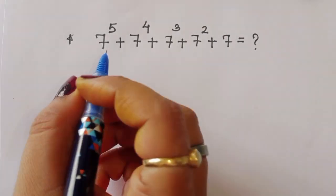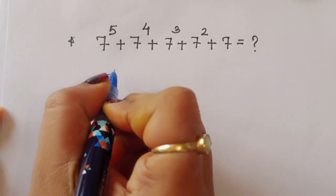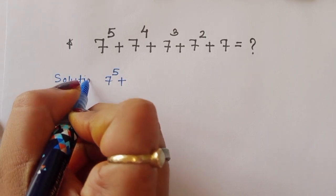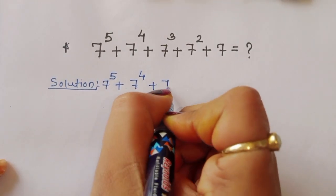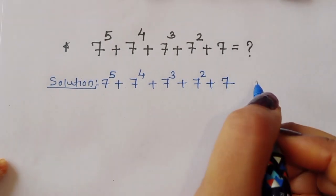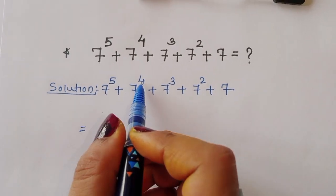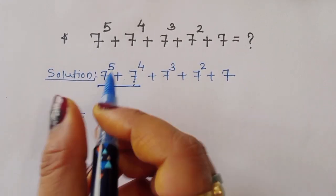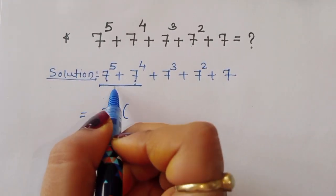We are solving this question without using a calculator, so let's see how we can solve this in an easy way. We have 7 power 5 plus 7 power 4 plus 7 power 3 plus 7 power 2 plus 7. Now, in this expression we can take 7 power 4 common.